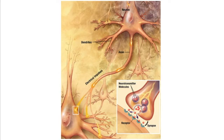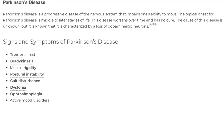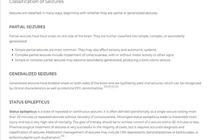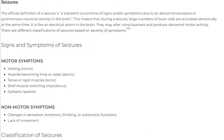Generalized seizures have bilateral onset on both sides of the brain and are typified by petit mal seizures, which can be recognized by clinical characteristics as well as interictal EEG abnormalities.